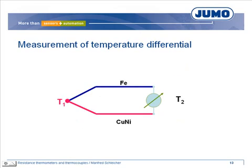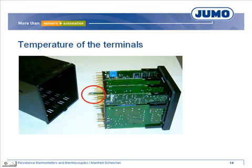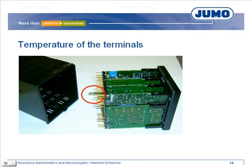Using a thermocouple, you can measure a temperature differential: temperature 1 minus temperature 2. Temperature 1 is the measured temperature and temperature 2 is the so-called reference temperature. To measure temperature 1, you must know temperature 2 and add up the values. Temperature 2 is the temperature of the terminals of the field device, measured by an additional temperature sensor. The temperature of the terminals is added to the calculated temperature differential — this is called internal temperature compensation.